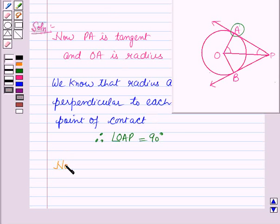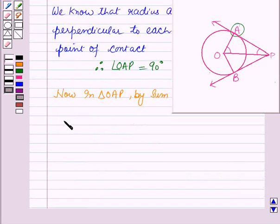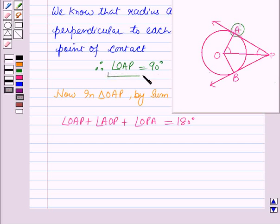In triangle OAP, angle AOP plus angle OAP plus angle OPA equals 180 degrees. We have angle OAP equal to 90 degrees. Substituting this value,